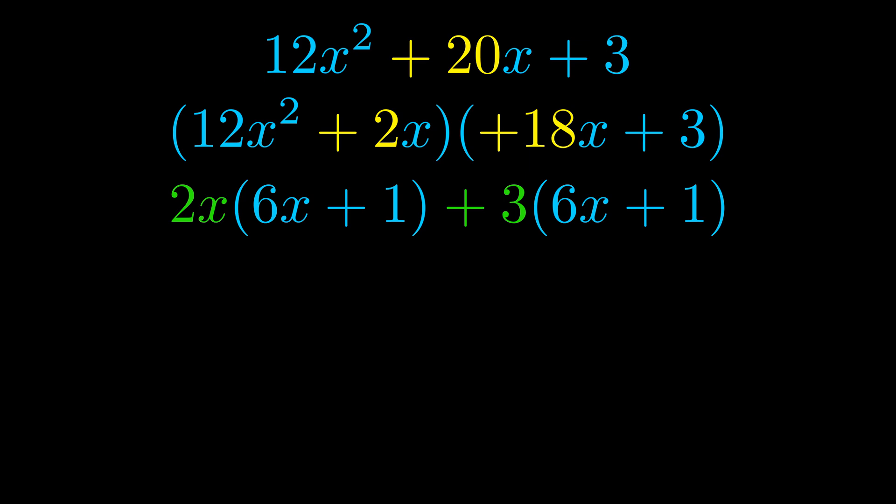Notice also how what remains inside of the parentheses is the same in both cases. The blue values are the same. Those blue values will become one of our factors and we will combine the two green values, the GCFs that we pulled out, to get the other one. And that is our fully factored equation.